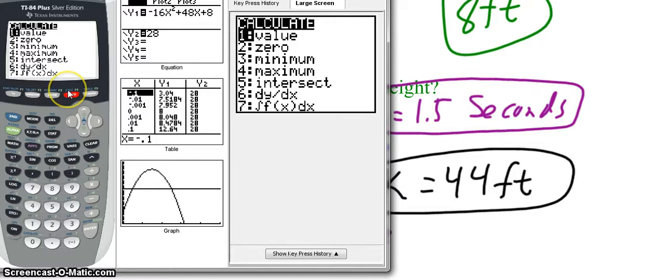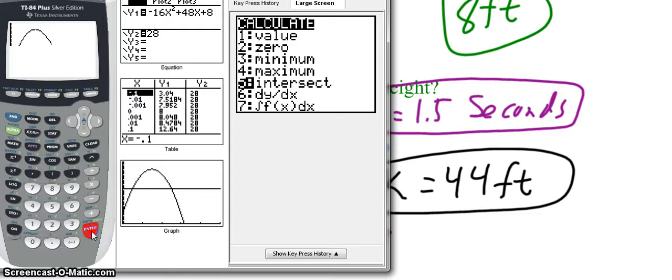So if I hit second trace, notice that above that it said calc. That means calculate. Notice that the fifth choice down is intersect. And we're trying to find an intersection. So I'm going to go down to 5. Or I could just type the number 5, just so you know. So I hit enter.